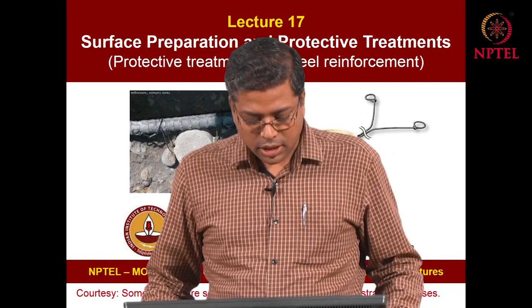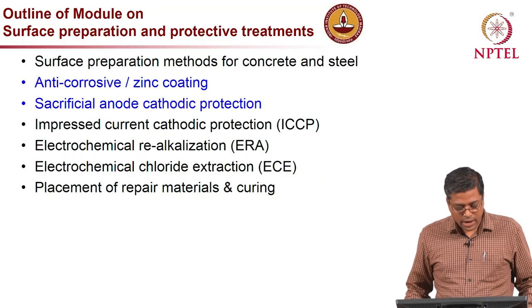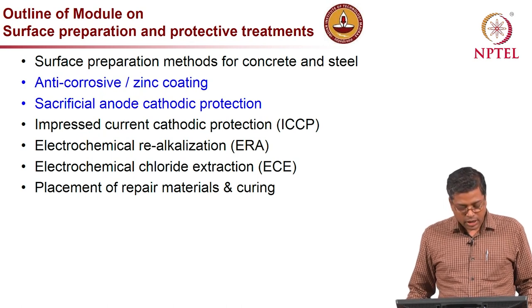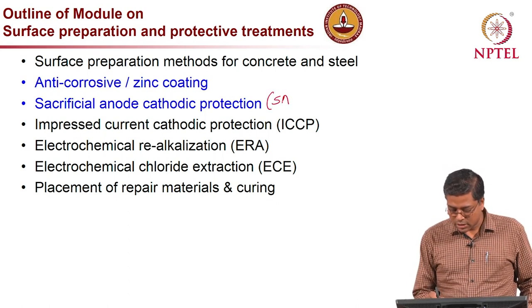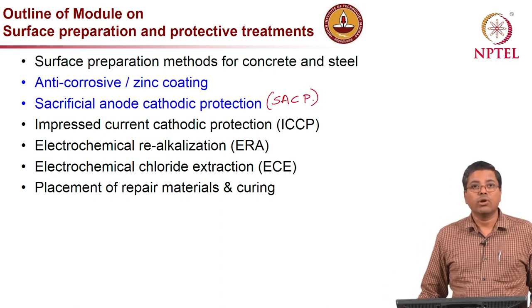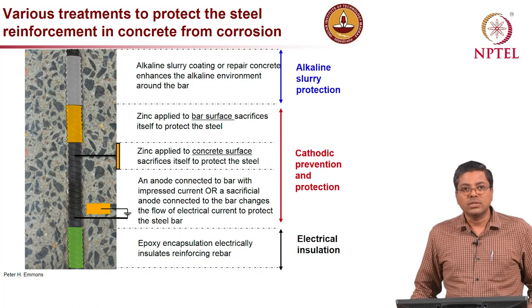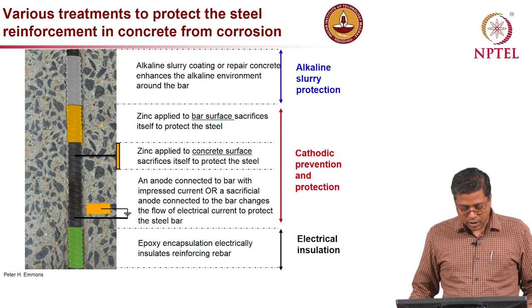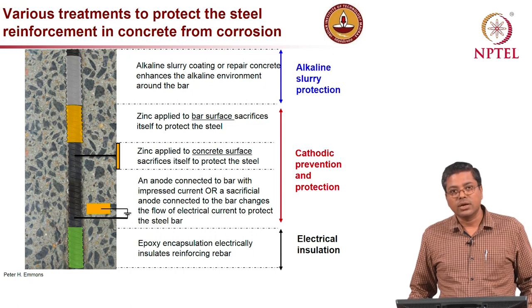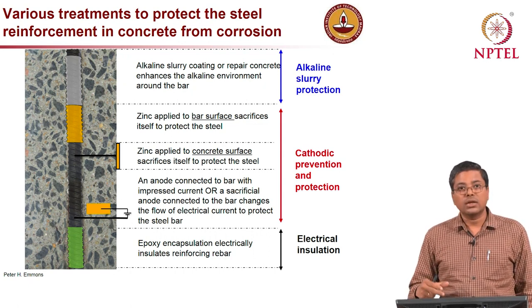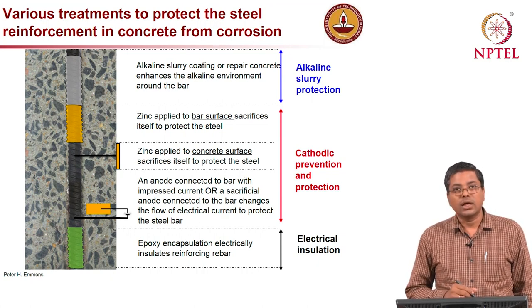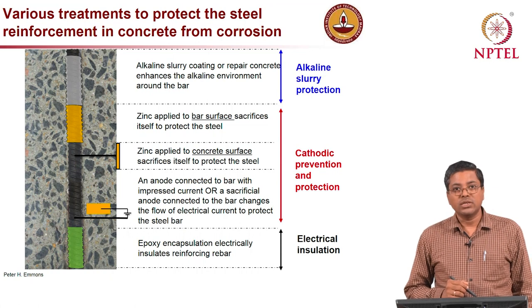In this module on surface preparation and protective treatments, this is the second lecture in which we will look at anti-corrosive or zinc coating, and also sacrificial anode cathodic protection (SACP). There are three general categories of treatments to protect steel reinforcement embedded in concrete: alkaline slurry protection, cathodic prevention, and cathodic protection.